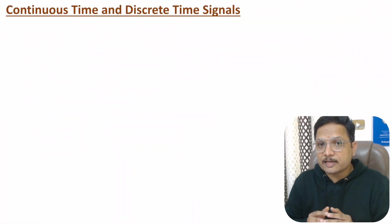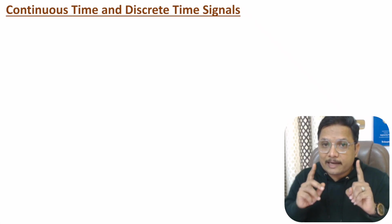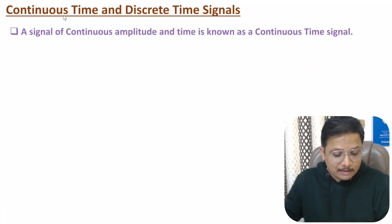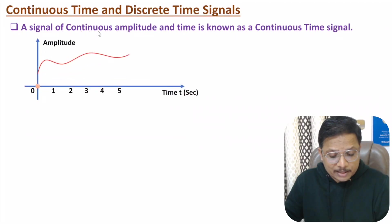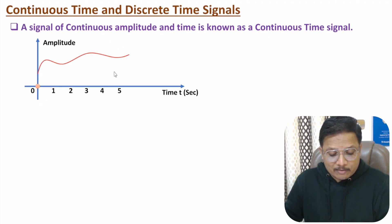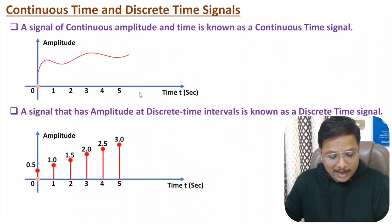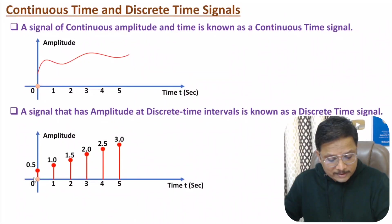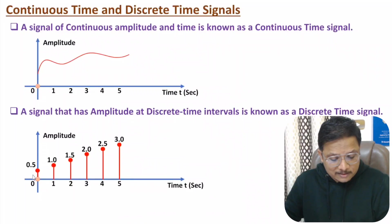In a continuous time signal, we have continuous amplitude and time. You can observe here one signal varying continuously with respect to time — amplitude is continuous as well as time is continuous. While in a discrete time signal, we have amplitude at discrete time intervals. On the horizontal axis we have time, and at discrete time intervals we have amplitude.